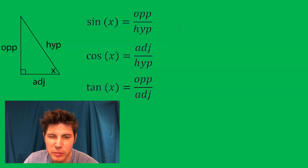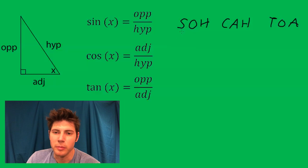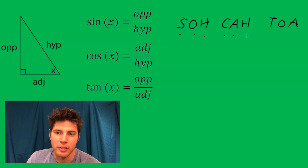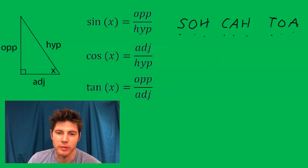Some people use SOH-CAH-TOA to remember this. It's a way to remember that sine is opposite over hypotenuse, cosine is adjacent over hypotenuse, and tangent is opposite over adjacent, which is what we have right here.